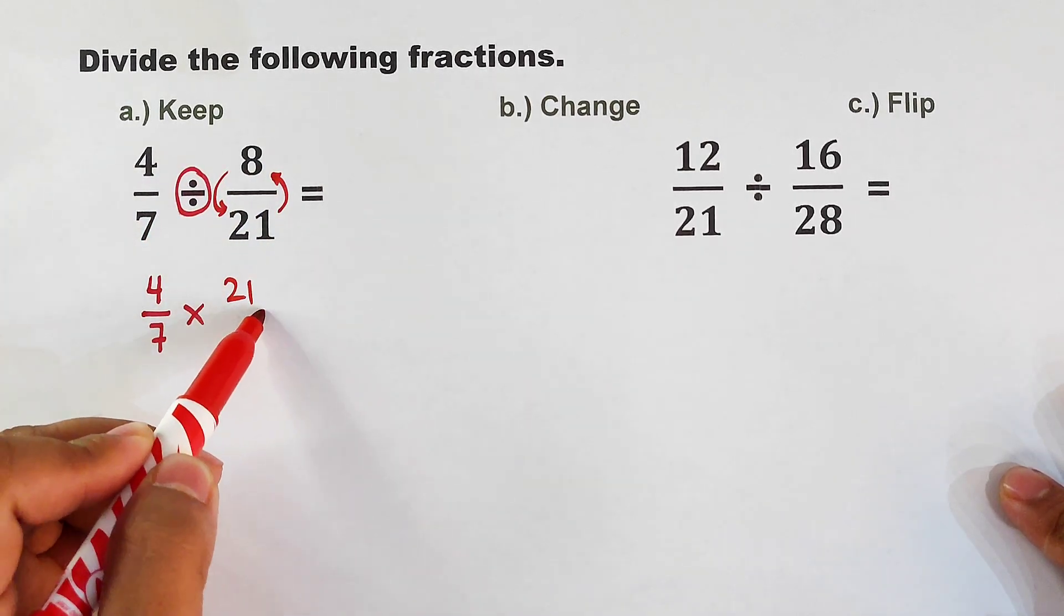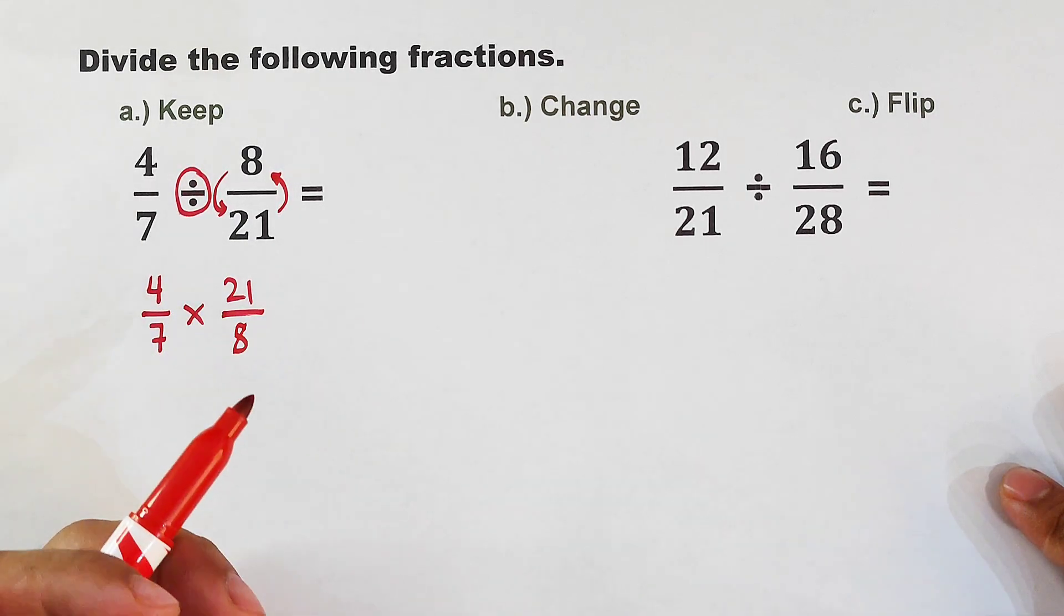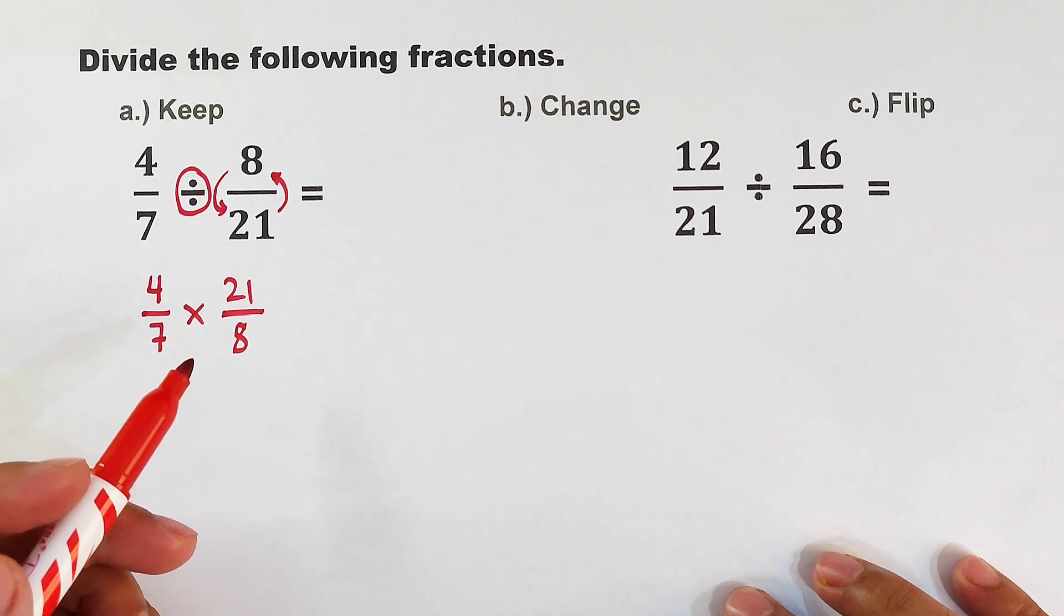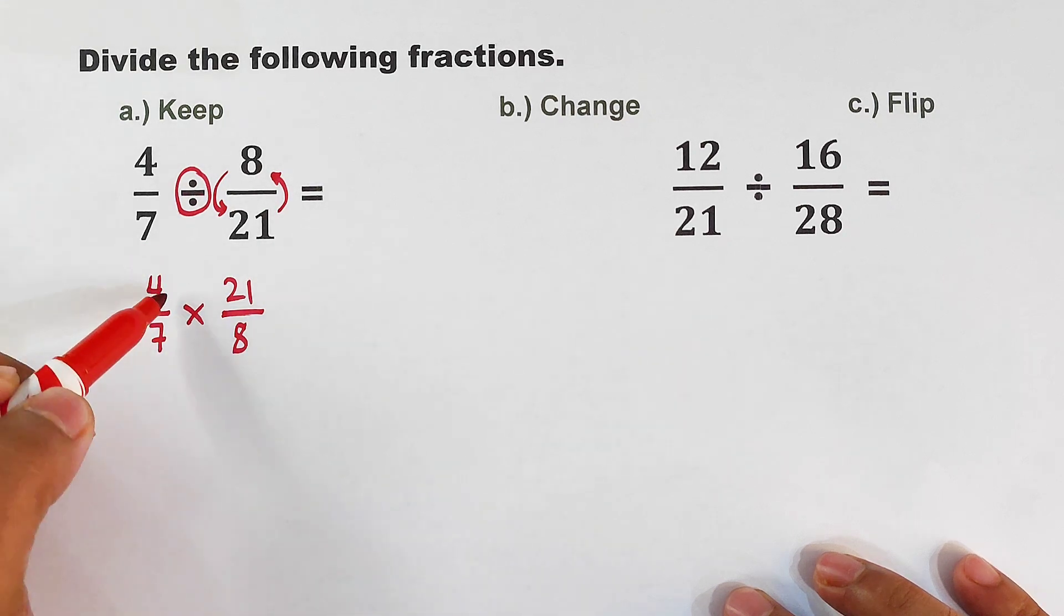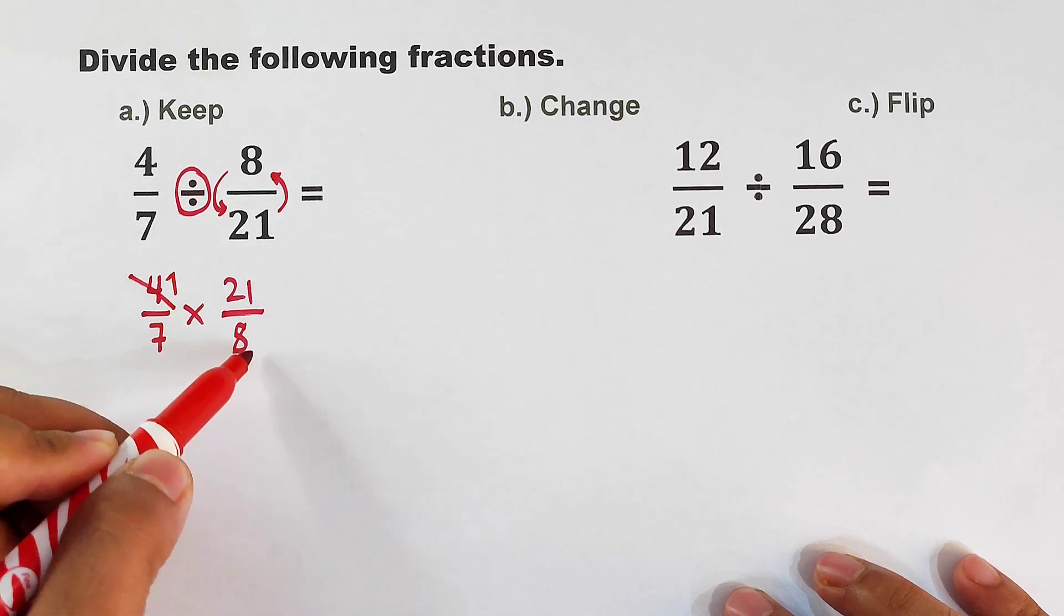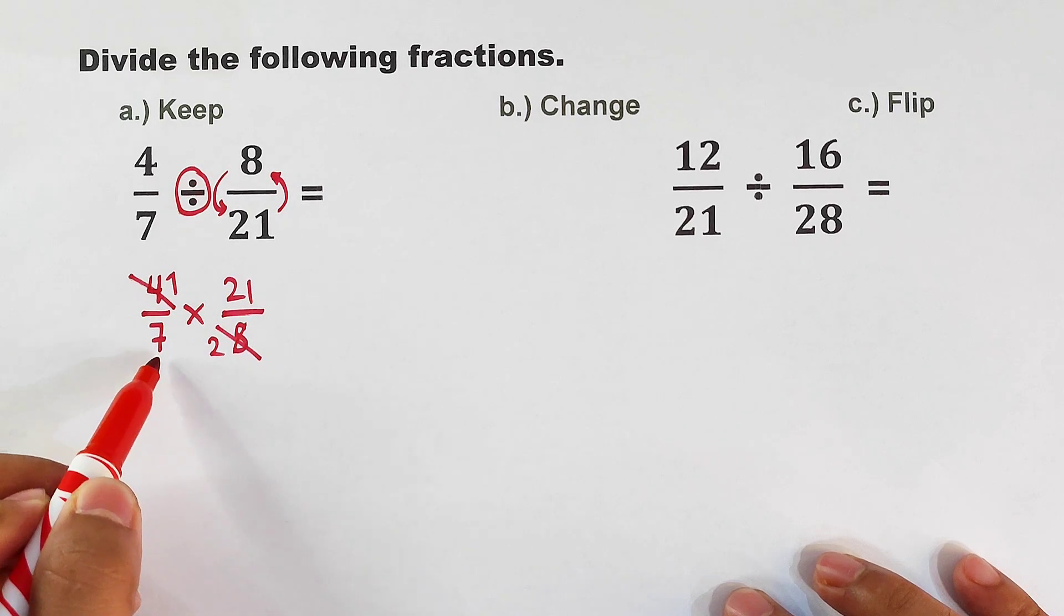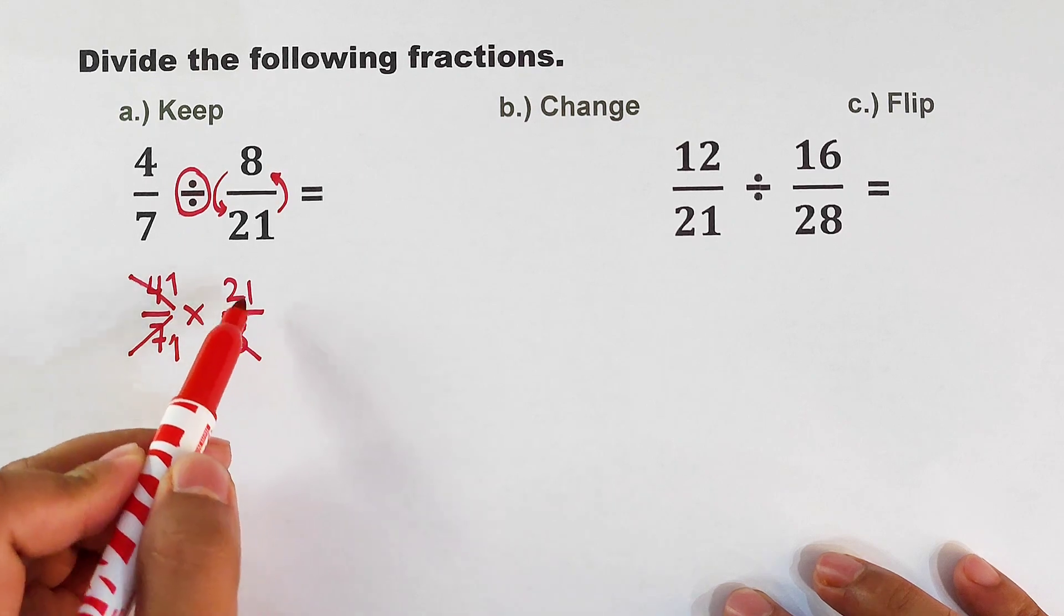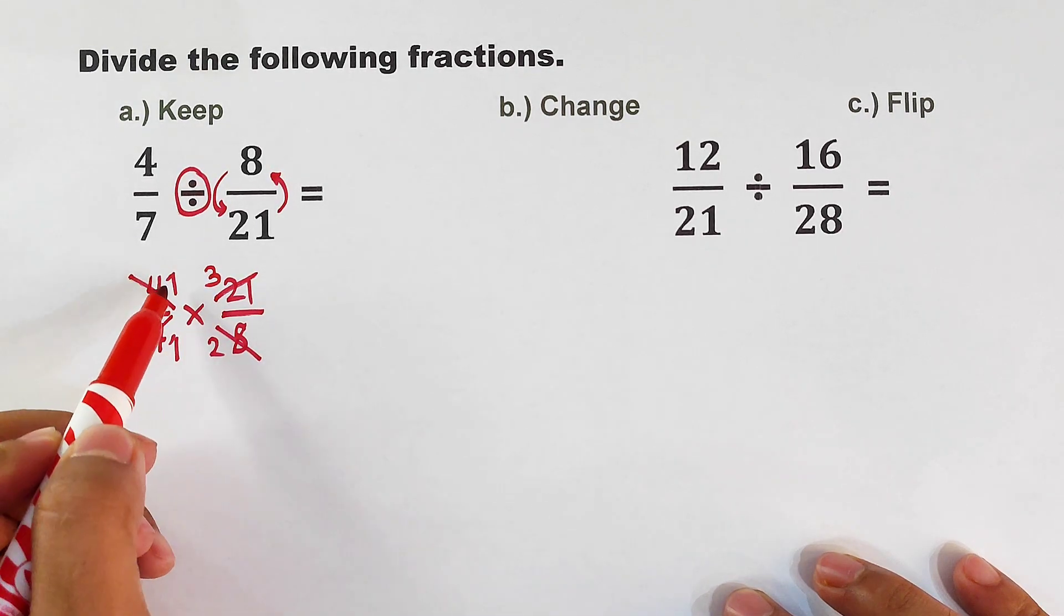Since the numbers are bigger compared to the previous examples, I would suggest that we will use the cancellation method. We will cancel out their common factors. Here, 4 and 8, the common factor is 4. We have one 4 here, two 4s here. And as for 7 and 21, their common factor is 7. How many 7s do we have in 7? We only have one, so we can cancel this out. It will become 1, and here in 21 we have 3 sevens.